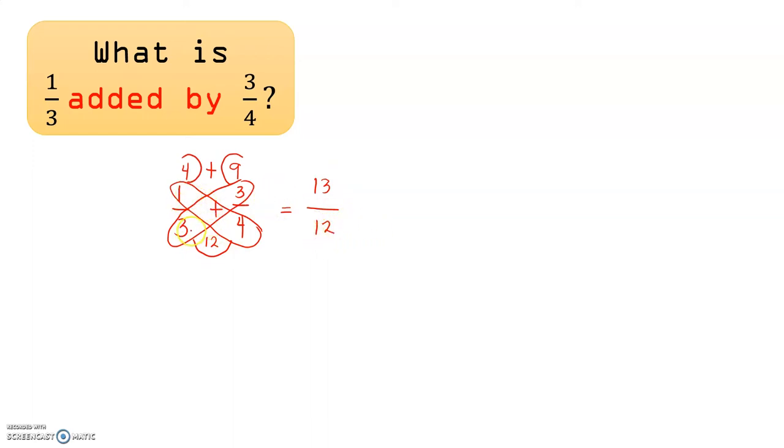That means 1/3 plus 3/4 is equal to 13/12. However, this fraction is an improper fraction, so we need to change it into a mixed number. And for us to do that, we'll simply divide the numerator by the denominator. 13 divided by 12 is 1, and 1 times 12 is 12. So we'll have a remainder of 1.